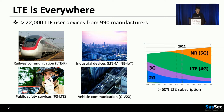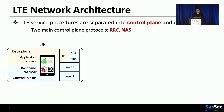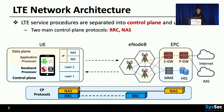LTE is still important and will be important for next years at least, and the security of LTE is very important. Let me give you a brief background of LTE before explaining our problem. UE, your smartphone, has two processors: an application processor which runs mobile OS such as Android or iOS, and a baseband processor which handles LTE communication. It communicates with eNodeB, the base station, and EPC, the core network, and provides cellular services.